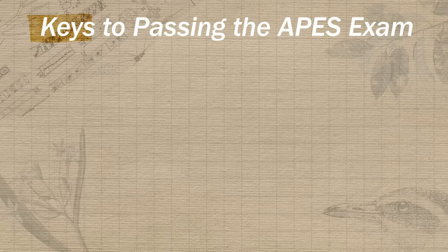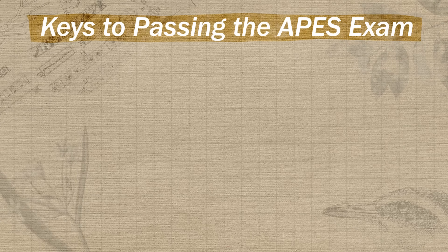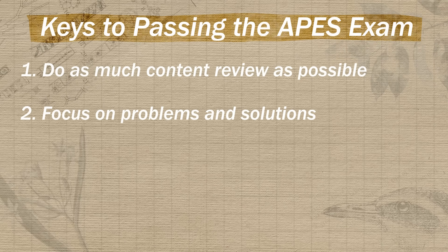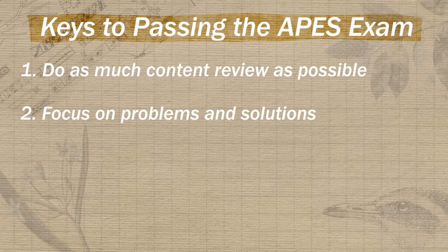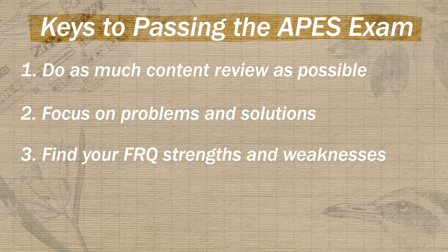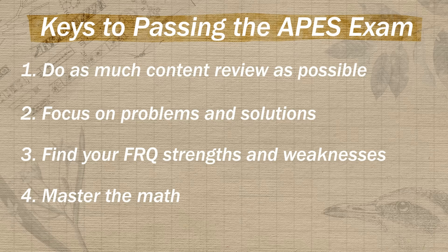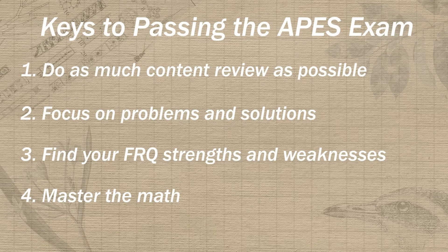Now that we've gone over the format and weighting of each exam section, let's review the four keys to passing the APES exam. First, the MCQ portion is pretty straightforward, so you need to spend time reviewing all of the content. Second, environmental solution questions make up nearly a quarter of both sections, so focus your content review on problems and solutions. Third, the FRQ portion has a really predictable format, so you can hone in on your strengths and weaknesses. And fourth, the types of math problems on the FRQ section are also very predictable and with a few hours, you can master them.